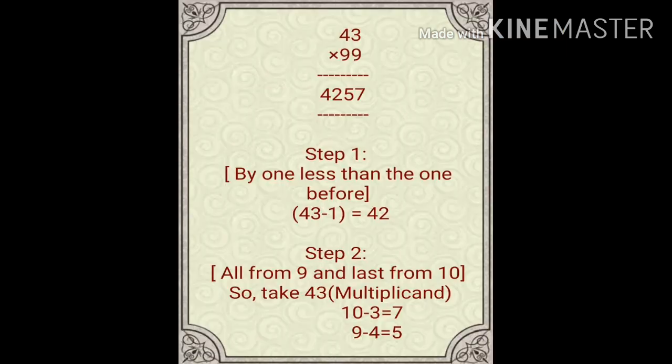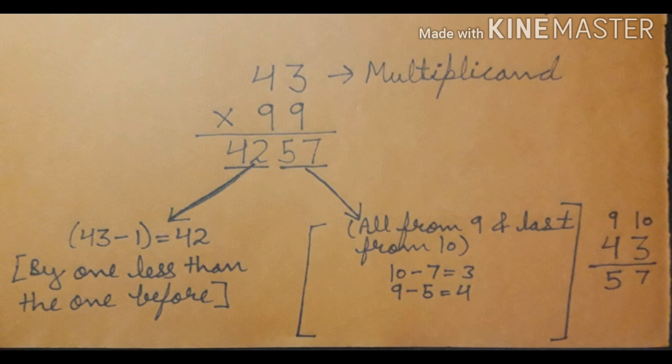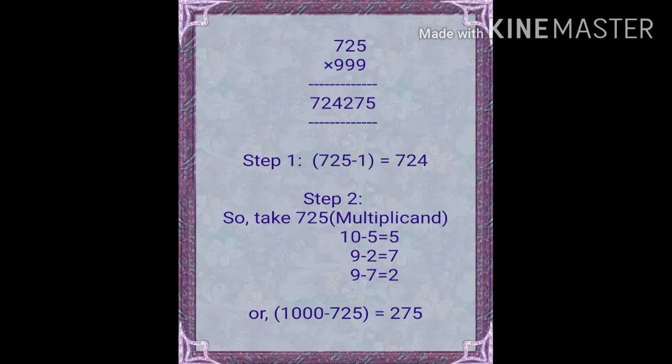Our first example is 43 into 99. As you can see, I have done this question in steps. Step 1 contains the first trick: by one less than the one before. First, you have to search your multiplicand, which is 43. Then subtract 1 from your multiplicand: 43 minus 1 is 42. The first answer is 42. You can see this picture, in this you can get it more.